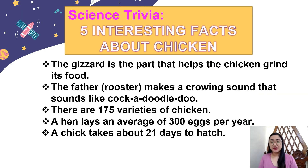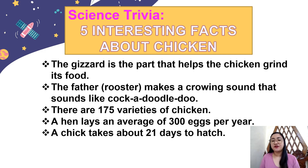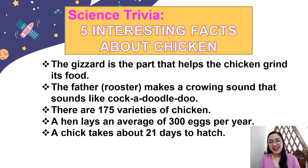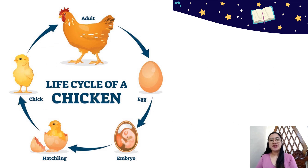Now that I have discussed three ways to make connections, let me give you more examples. But first, here is a science trivia — five interesting facts about chicken: The gizzard helps the chicken grind its food. The rooster makes a crowing sound like cock-a-doodle-doo. There are 175 varieties of chicken. A hen lays an average of 300 eggs per year. And a chick takes about 21 days to hatch.